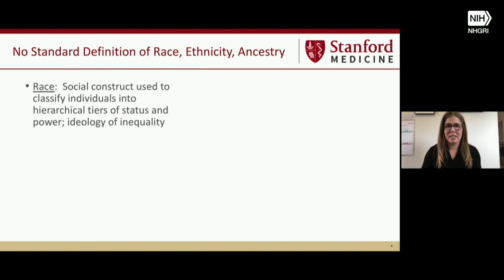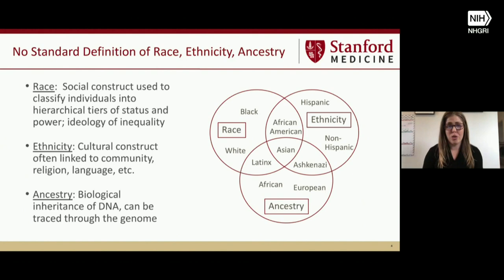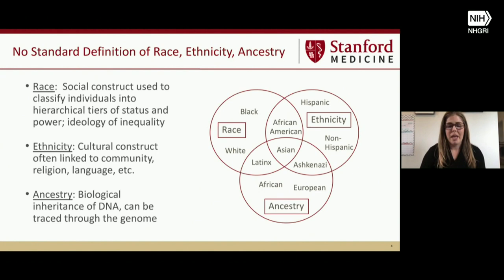Given that there's no standard definition of race, ethnicity, or ancestry, these are the definitions I use. Race is a social construct used to classify individuals into hierarchical tiers of status and power, and it's really based on an ideology of inequality. Whereas ethnicity is a cultural construct similar to race but distinct in that it's often linked to community, religion, language, et cetera. And ancestry is the biological inheritance of DNA, which can be traced through the genome.